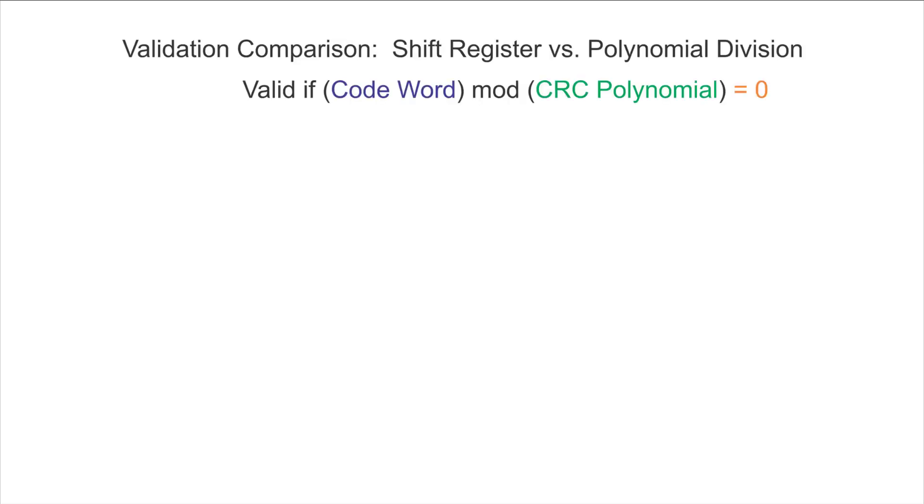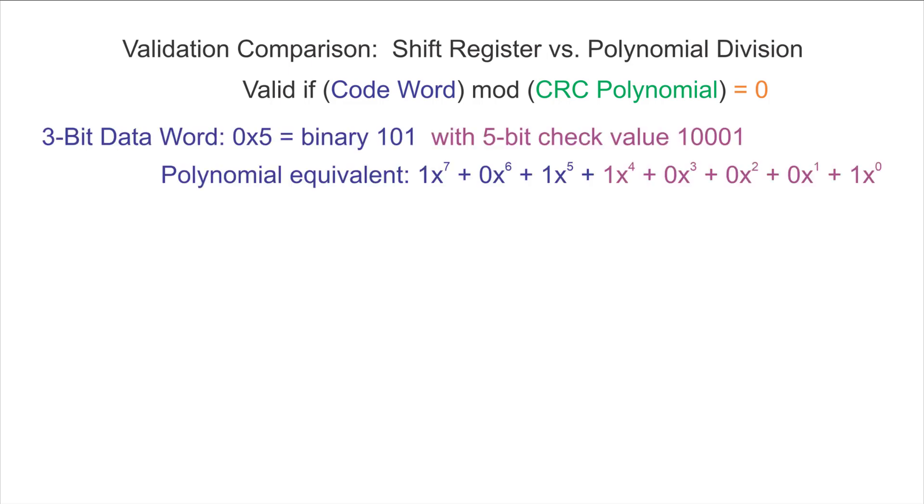For this computation, we're going to check the validity of a codeword by seeing whether the codeword mod the CRC polynomial ends up being the value 0. For a data word, we'll use binary 1, 0, 1. We'll use a 5-bit check value that's already been computed of 1, 0, 0, 0, 1.